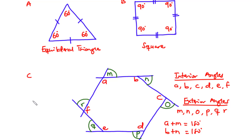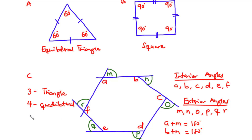A regular polygon with three sides is called a triangle, that with four sides is a quadrilateral, one with five sides is a pentagon, and that with six sides is a hexagon, and so on and so forth.